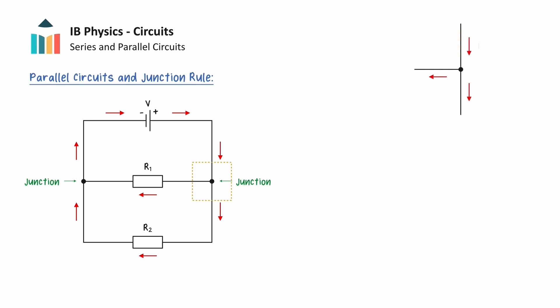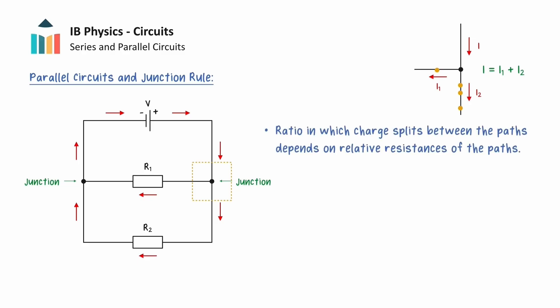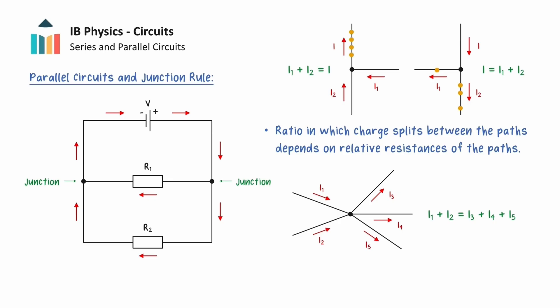If we consider where the path splits, the charge passing from the input wire to the junction in a given time must be equal to the charge leaving the junction to the output wires in the same time interval, because charge must be conserved. So algebraically, the current entering this junction must be equal to the current leaving this junction. The ratio in which the charge splits between the paths depends on the relative resistances of the two paths. If we now look at the section of the parallel circuit where the two paths merge as a junction, the total charge approaching the junction from both paths must be equal to the charge leaving the junction in the same time interval. The same reasoning can be extended to any number of input and output wires, and this is known as the junction rule.